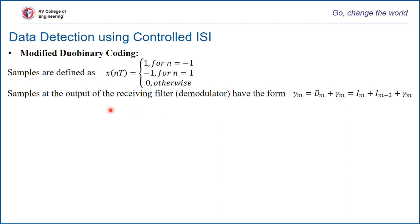What is the advantage of this? The modified duobinary has an advantage of eliminating high energy at DC. The energy at f equal to 0 is 0, unlike with simple duobinary coding.